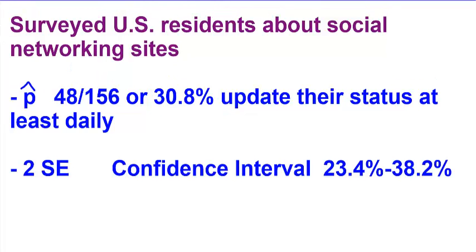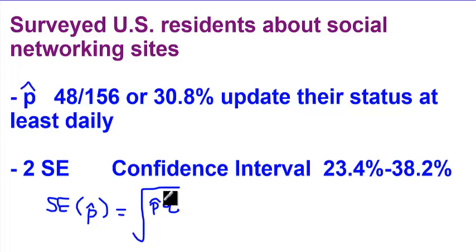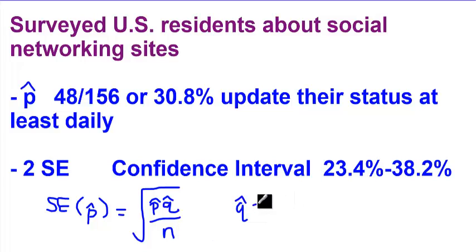To get that, we use the standard error equation. The standard error of our sample proportion, p-hat, equals the square root of p-hat times q-hat divided by n, the number of people that we ask. Just a reminder, q-hat equals 1 minus p-hat.